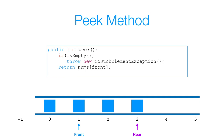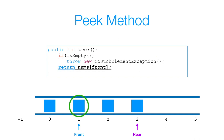Now let's look at the peek method. This method is pretty straightforward. If my queue is empty, I throw a new NoSuchElementException to indicate there are no elements currently in my queue. Otherwise, I simply return the data associated with the front index in my queue.